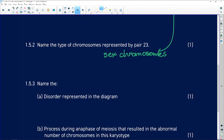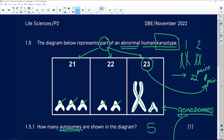Name the disorder represented in the diagram. In the instructions we learned that it was an abnormal human karyotype. We know that we have a pair of chromosomes - one chromosome from the mother, one from the father.